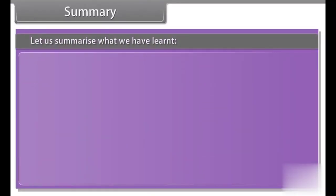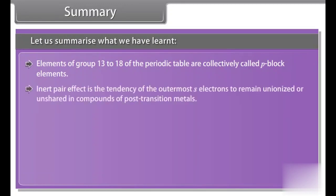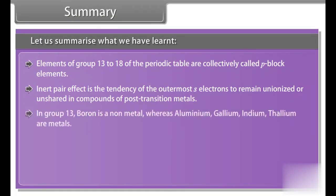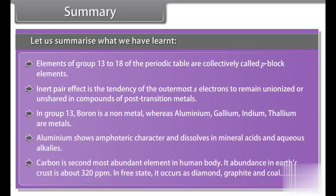Summary. Let us summarize what we have learnt. Elements of group 13 to 18 of the periodic table are collectively called p-block elements. Inert pair effect is the tendency of the outermost s-electrons to remain unionized or unshared in compounds of post-transition metals. In group 13, boron is a non-metal whereas aluminium, gallium, indium, thallium are metals.